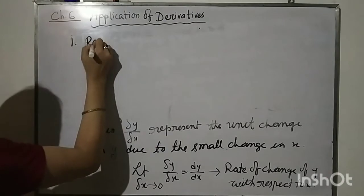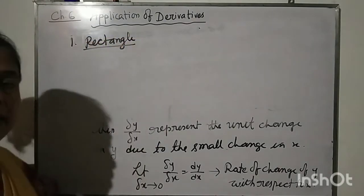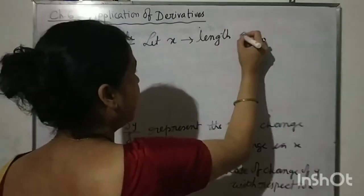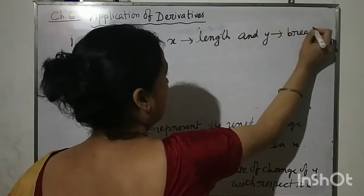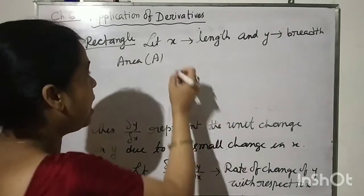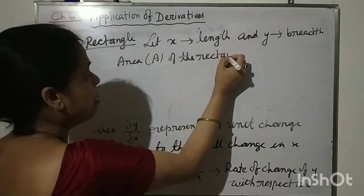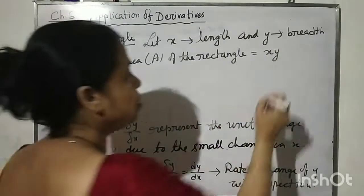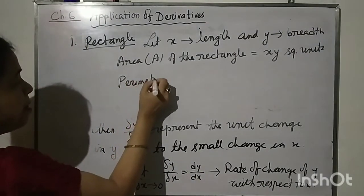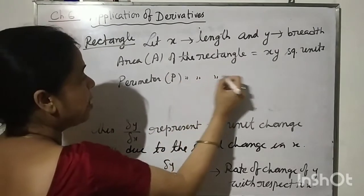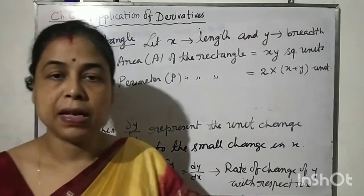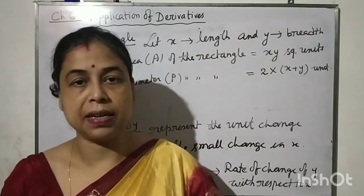First, let us consider a rectangle. Let x be the length and y be the breadth. Then the area A of the rectangle is given by x times y, in square units. The perimeter P of the rectangle is 2 times (x plus y). The unit is the same as the measurement unit of x and y, for example centimeters or meters.